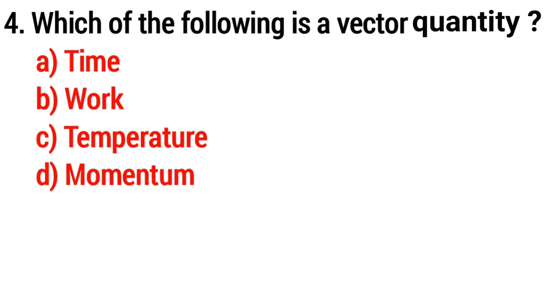Question 4: which of the following is a vector quantity? The answer is option D, momentum.